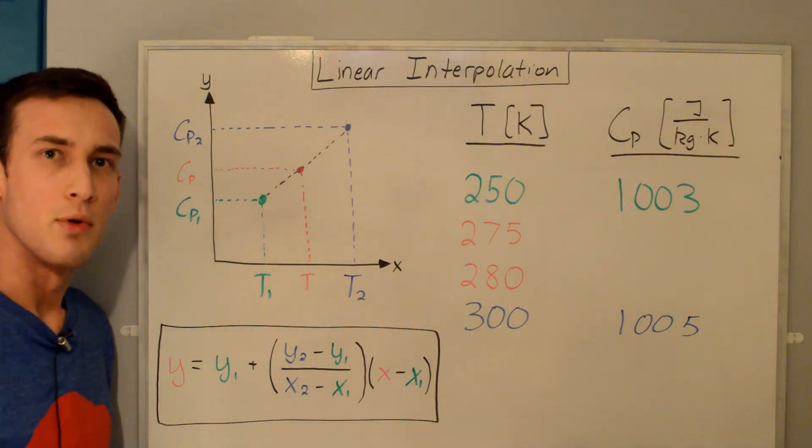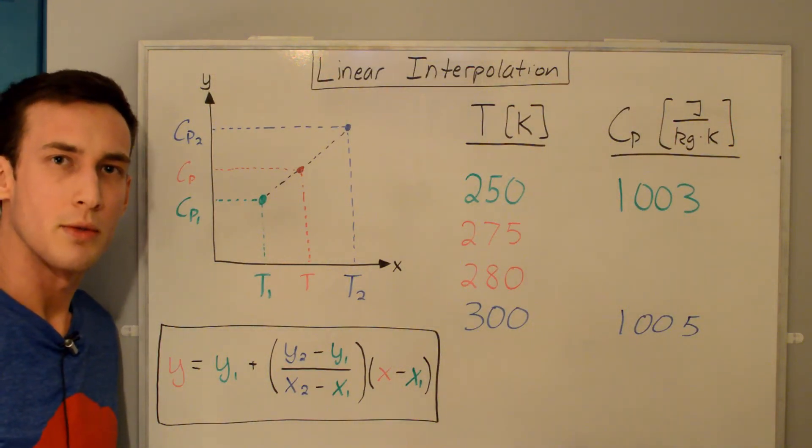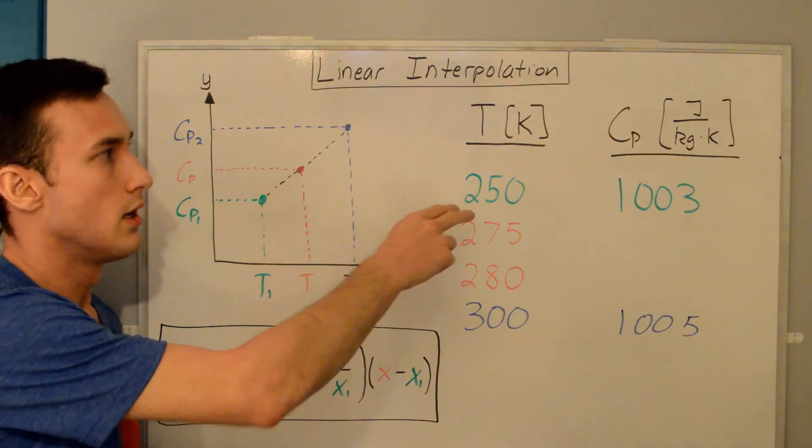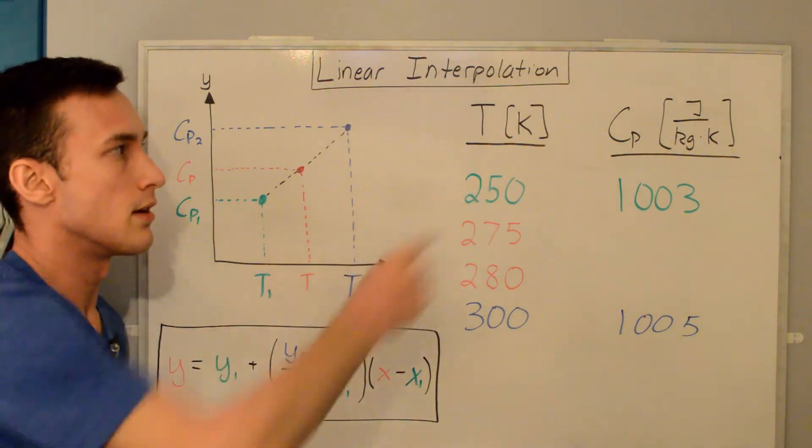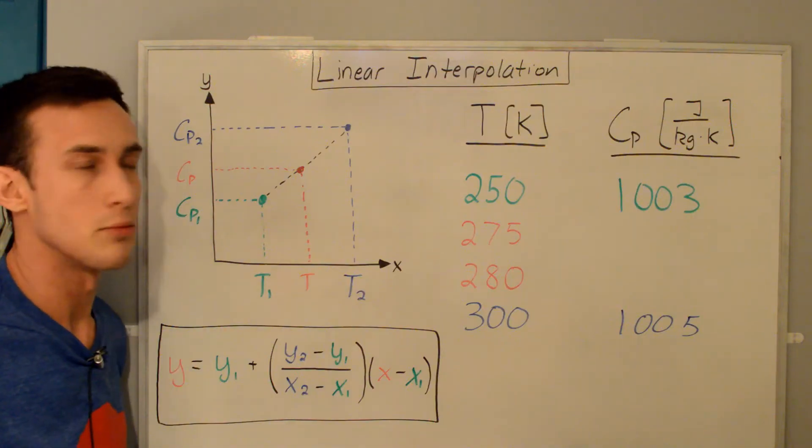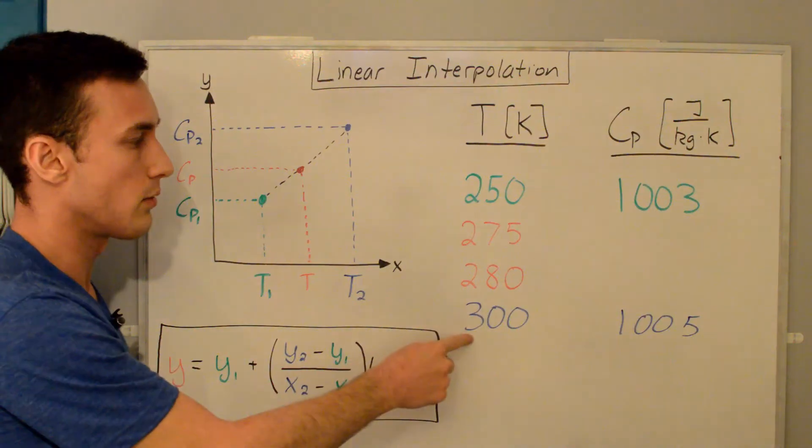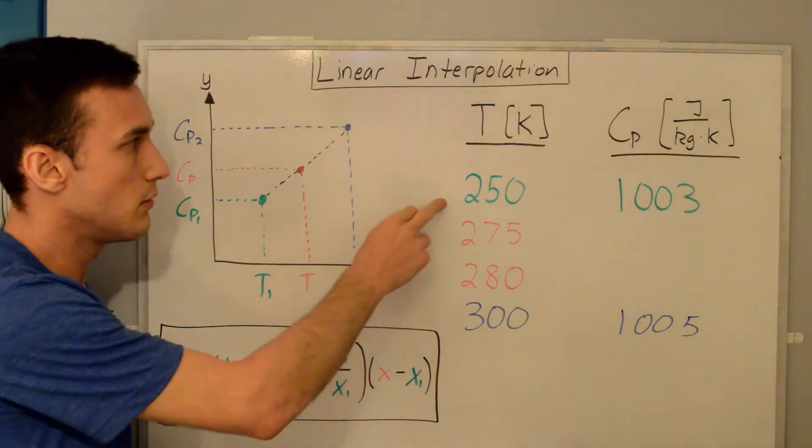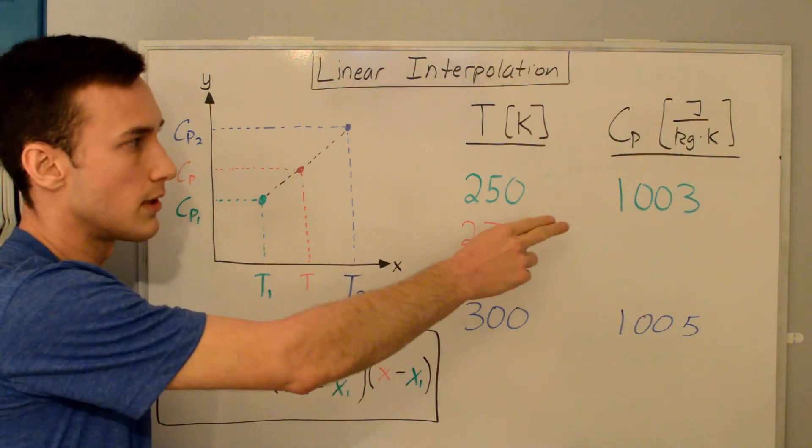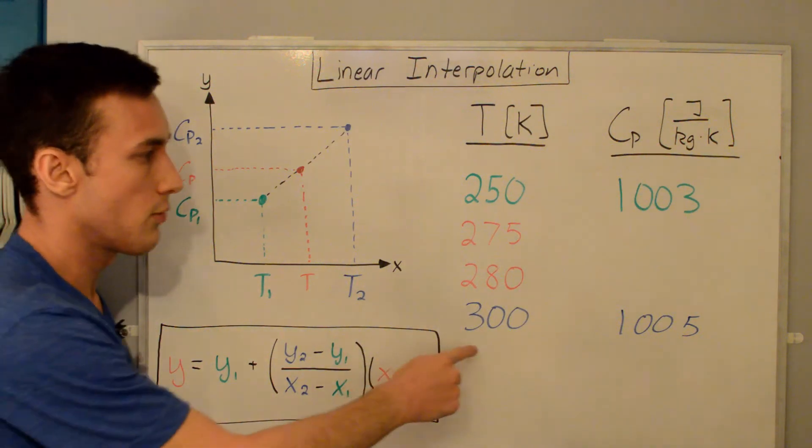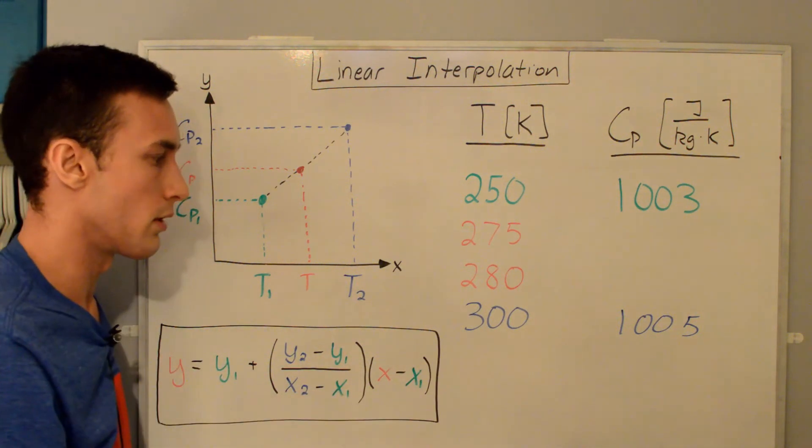Now, we can do a quick example. This one's straight out of the thermodynamics book that I have from the property tables for temperature. This is for air, temperature, and specific heat at constant pressure. The knowns that we have in the book, they're given at 250 and 300 Kelvin. At 250 Kelvin, we know that the specific heat at constant pressure is 1003 joules per kilogram Kelvin, and at 300, it's 1005 joules per kilogram Kelvin.